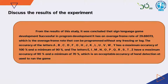Conclusion: From the result of this study, we conclude that the Sign Language Game development was successful. It has an average frame rate of 29.88, which is sufficient to run the program without any freezing or lag. The accuracy of the letters A, B, C, D, F, G, H, J, K, L, U, W, Y has a maximum accuracy of 100% and a minimum of 90%.